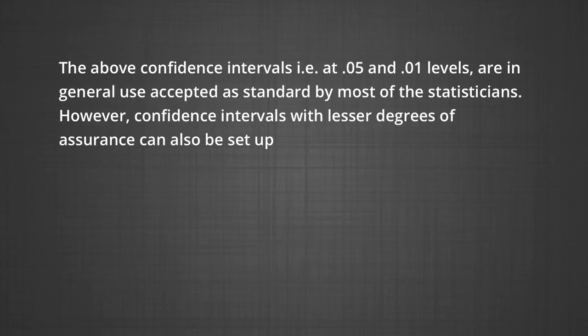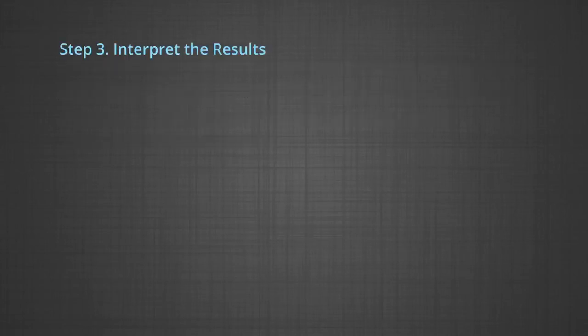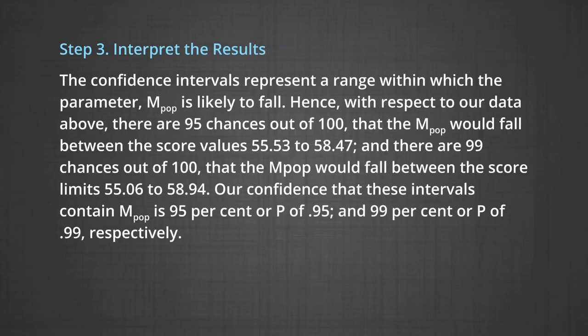The above confidence intervals at 0.05 and 0.01 levels are in general use and accepted as standard by most statisticians. However, confidence intervals with lesser degrees of assurance can also be set up. The confidence intervals represent a range within which the parameter or population mean is likely to fall. Hence, with respect to our data, there are 95 chances out of 100 that the population mean would fall between the score values 55.53 to 58.47.